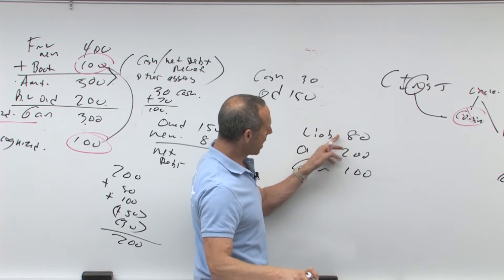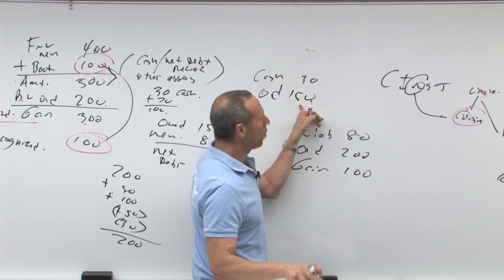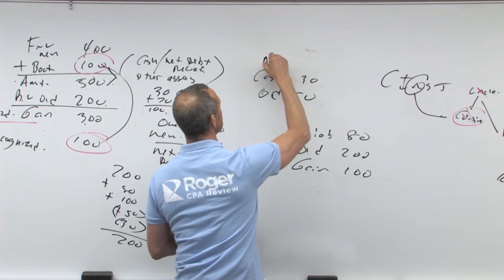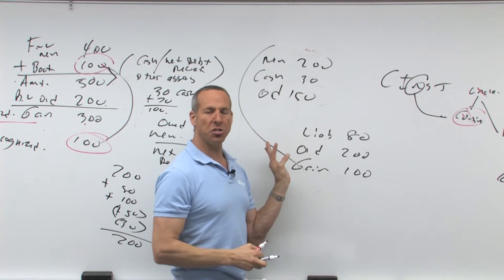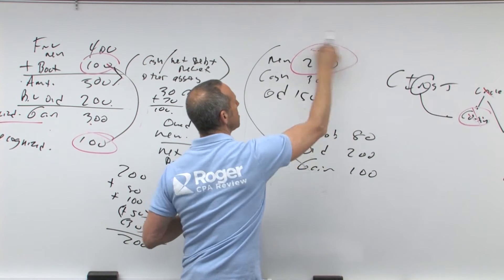We got the 200, the 80, that's 380. Here we've got 180, the difference is the new of 200. So if you do it this way, it's much easier to figure out the basis of the new. This is the plug.